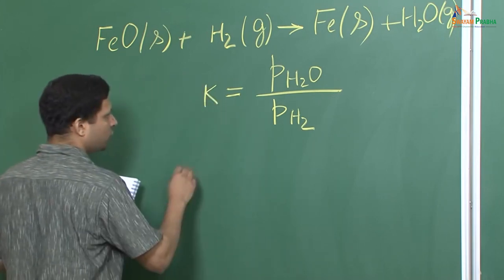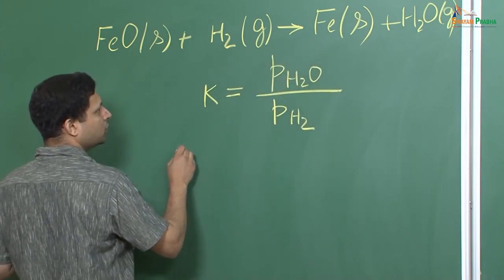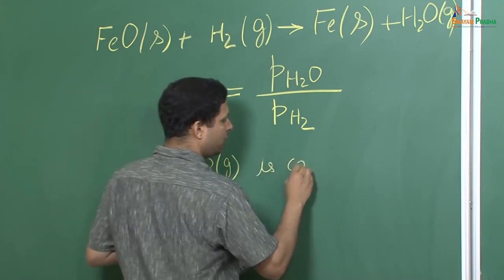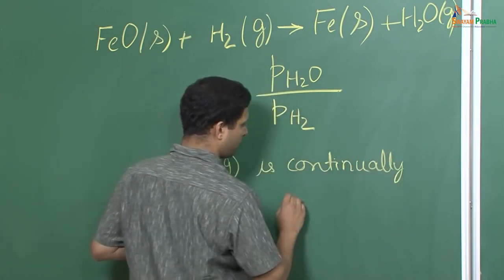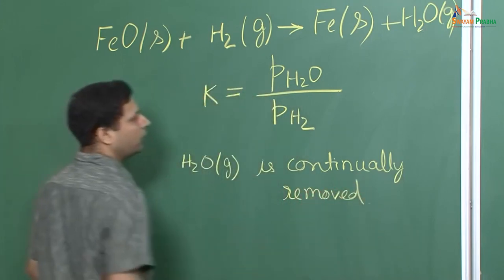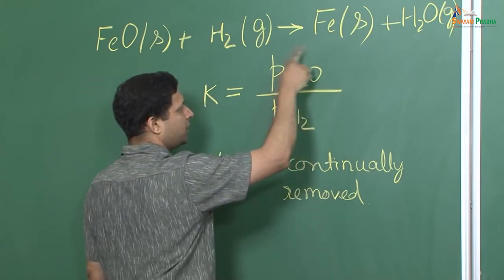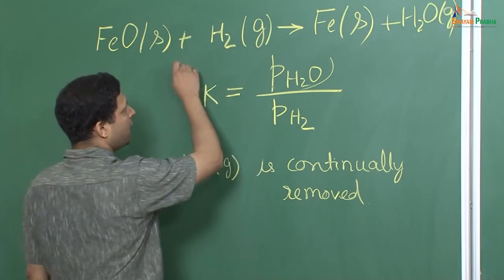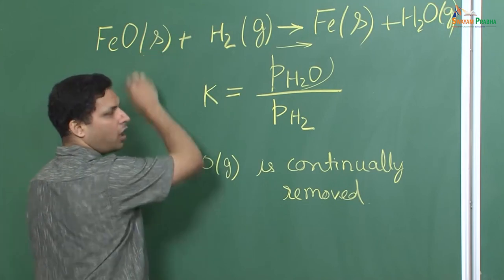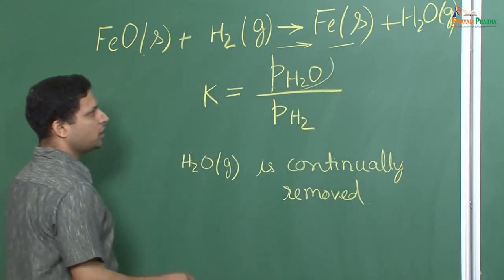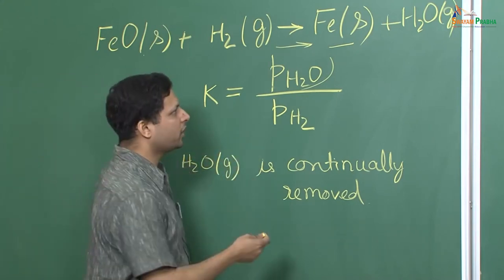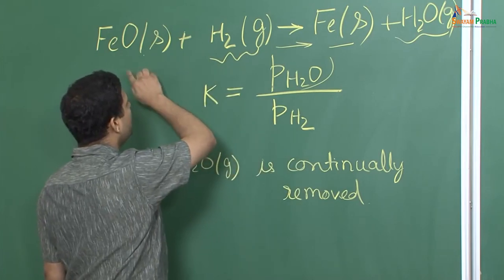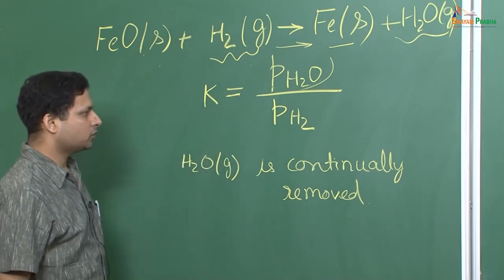In order to take the reaction to completion, H₂O in gaseous state must be continually removed. When H₂O is continuously removed, this ratio is reduced, and to restore equilibrium the reaction proceeds in the forward direction — more and more FeO gets reduced to iron. Removing H₂O ensures the reaction keeps going forward.